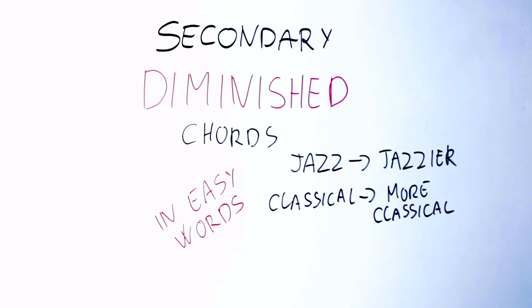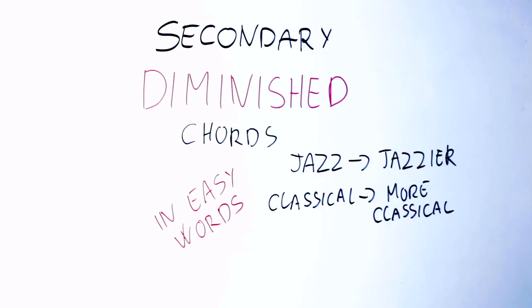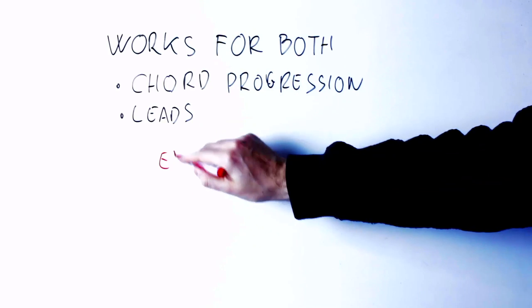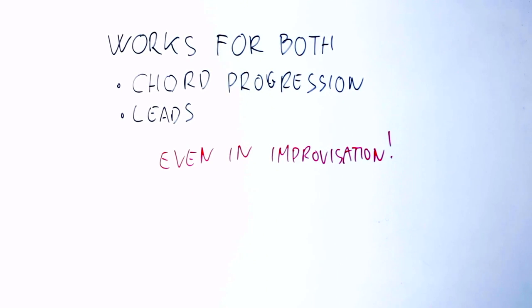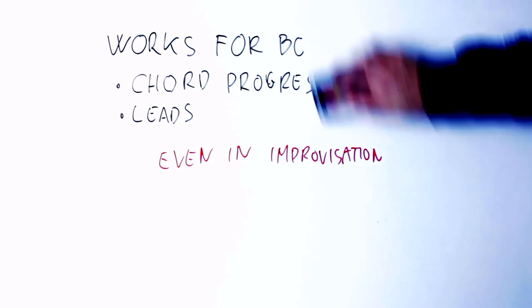What if there was a trick that can make your jazzy chord progressions and solos sound jazzier, and your classical or neoclassical chord progressions and solos sound more classical or neoclassical? Well, this trick exists and we are covering it right now. It can be applied to both chord progressions and leads, even when you improvise, so it's easy enough that you can apply this in real time once you practice with it a little bit. Let's get the basics down first, and see how to apply this trick to chord progressions, and then later in the video we apply this trick to leads.